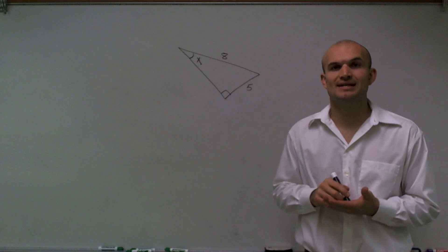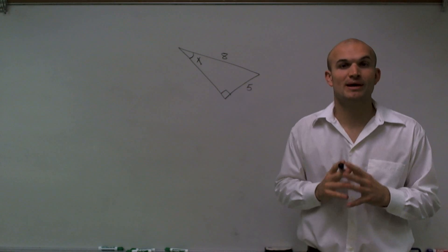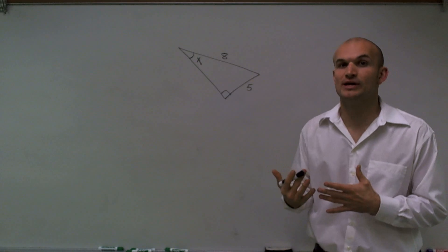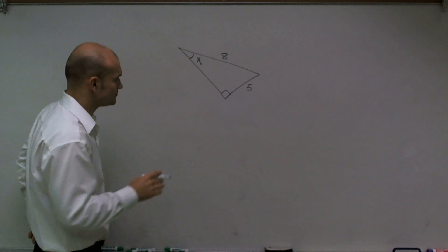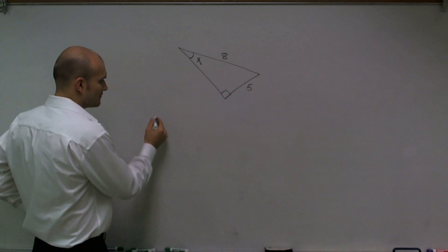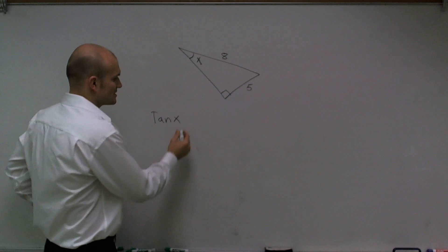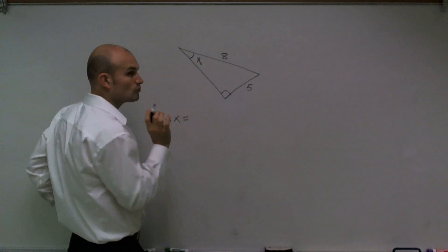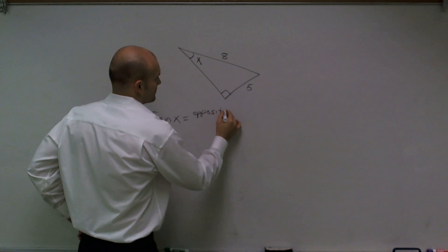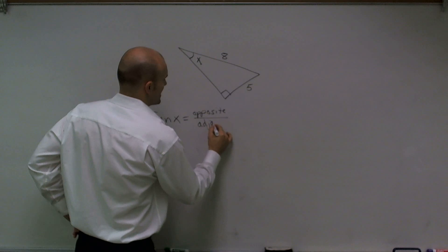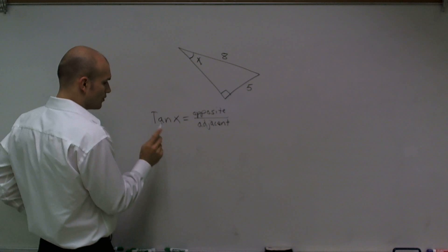When we're finding missing angles, it's really helpful for us to use three trigonometric functions. I want to go through this and explain the trigonometric functions to help you understand them. When we have a trigonometric function, the first one I want to talk about is tangent. Tangent of an angle x is equal to the ratio of the opposite side over the adjacent side.